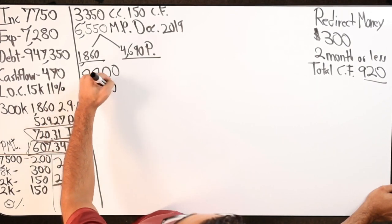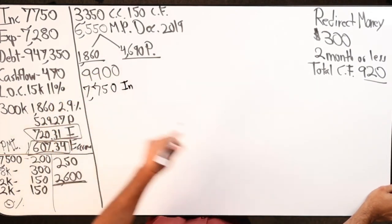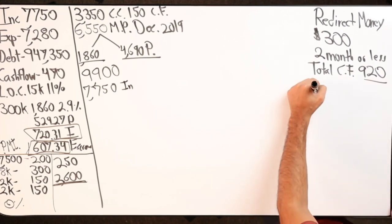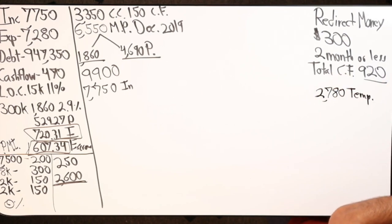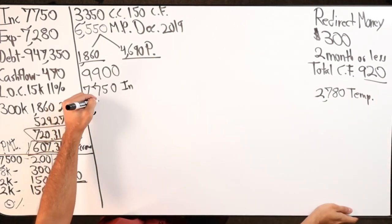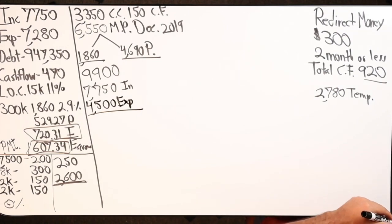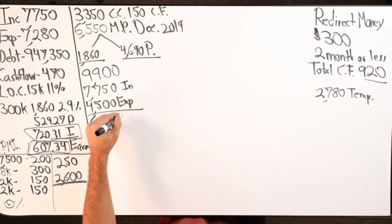Income will go in, and then expenses are now $7,280. Let's see what was that number, $920 plus $1,860, $2,780 temporary for one month. $7,280 minus $2,780, so for the month of December only $4,500 will come out of the line of credit. $9,900 minus $7,750 plus $4,500, $6,650 plus interest.